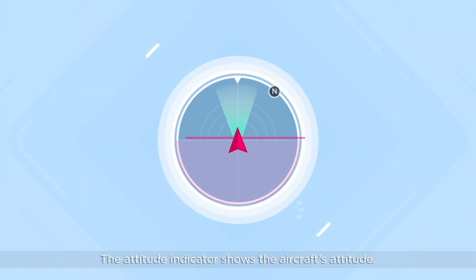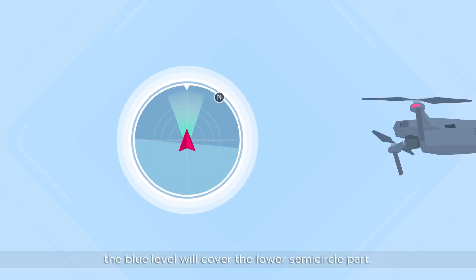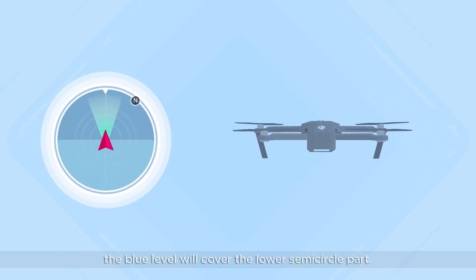The attitude indicator shows the aircraft's attitude. When the drone hovers in place, the blue level will cover the lower semicircle part.